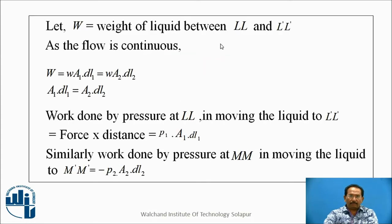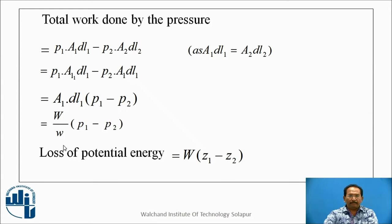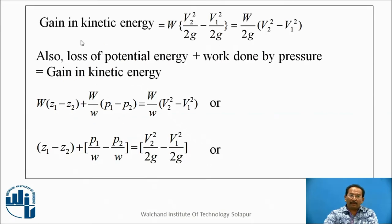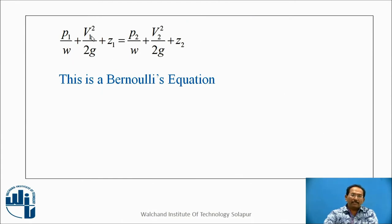Starting with the derivation, you have to find out the weight of the liquid, then the work done — which equals force times distance or displacement. Calculate the total work done, then the loss of potential energy, step by step, then the gain in kinetic energy. Loss of potential energy plus work done by the pressure equals gain in kinetic energy. Simplifying this, you get: P1/W + V1²/2G + Z1 = P2/W + V2²/2G + Z2. This is Bernoulli's equation.